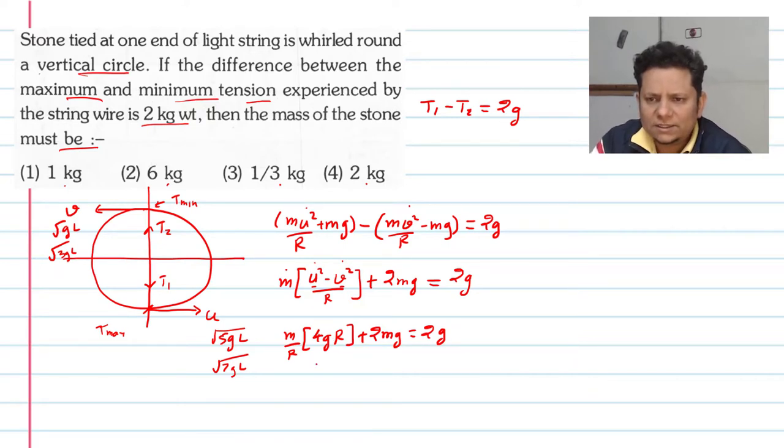So here, g cancels. Left-hand side: 4mg plus 2mg equals 2g, which implies g cancels, which implies 6m equals 2, which implies m value is 1/3 kg.